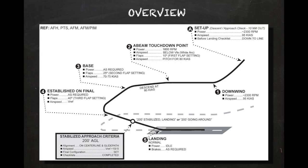In this module, we'll cover the normal approach and landing in the Piper Warrior. The maneuver will begin midfield downwind for runway 27 at Platka Municipal Airport, which is non-towered. In addition to reviewing target airspeeds, power settings, and configurations, we'll also take a look at the stabilized approach criteria and the after-landing checklist.